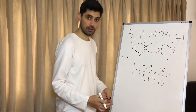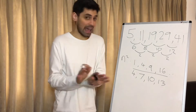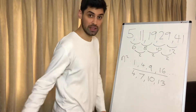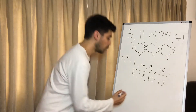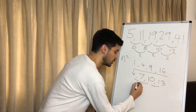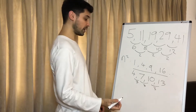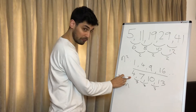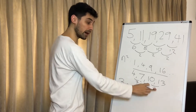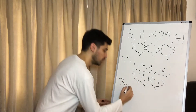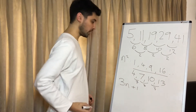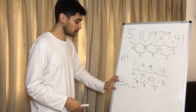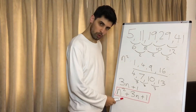Now what we have here is a linear sequence — a regular nth term sequence which we should know how to do. So we find the difference between all of these, which is going to be 3. So that means we're going to have 3n. What would be the term before this if we had one? Well if they're going up by 3, the term before would be 3 less, so it would be a plus 1. So our final answer is n squared plus 3n plus 1.